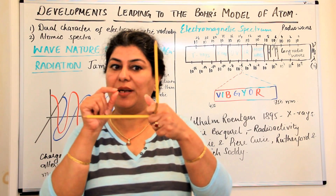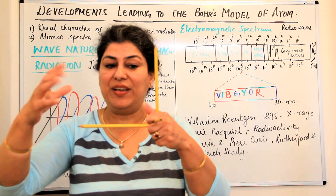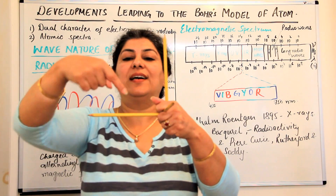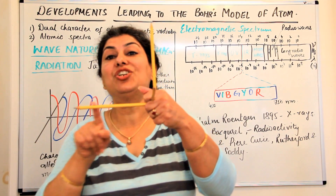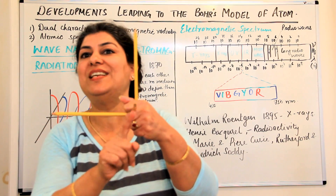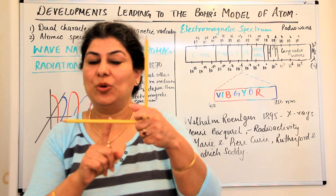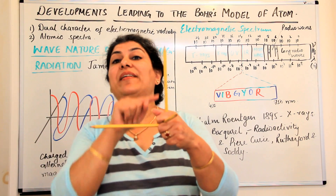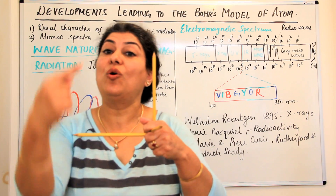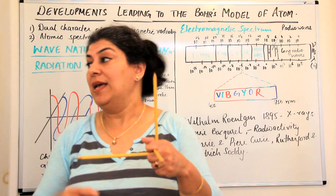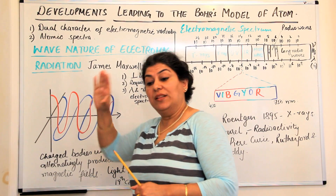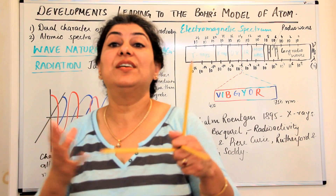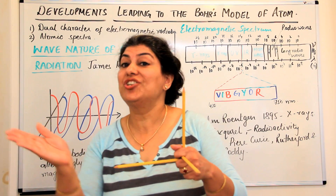Electromagnetic radiations: when charged particles move, they produce an electric field in one direction and a magnetic field in the other direction, but the propagation of the wave takes place perpendicular to both of these. The electric and magnetic fields are perpendicular to each other, and the direction of propagation is perpendicular to both. That is how the wave nature of electromagnetic radiations was imagined.